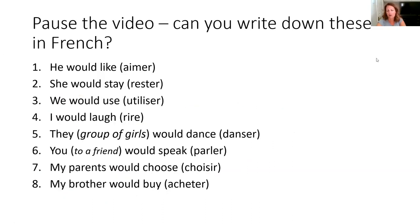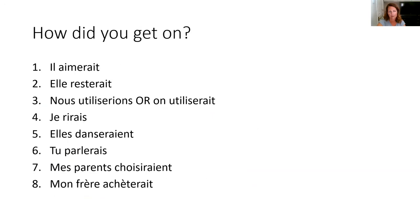Please get a piece of paper and pen, pause the video, and have a go at translating these eight examples of the conditional tense. Here are the answers: il aimerait, elle resterait, nous utiliserions (or on utiliserait), je rirais, elle danserait, tu parlerais, mes parents choisiraient, mon frère achèterait. You can notice for each of those that there's an 'r' sound, and that's really what we're listening out for with the conditional tense.